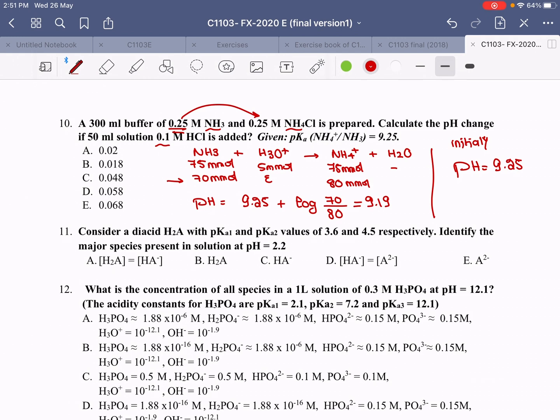9.25 minus the answer that you got, which is 9.19, it is 0.0579. I'm going to take a look at this which is 0.058. Part D.